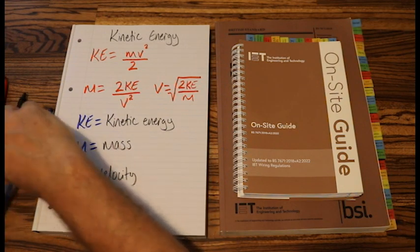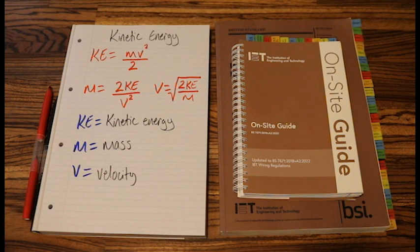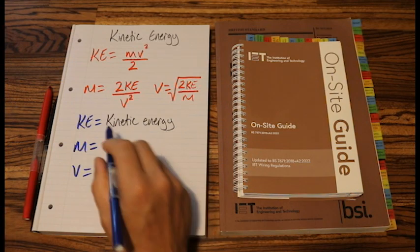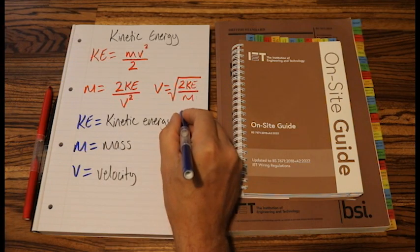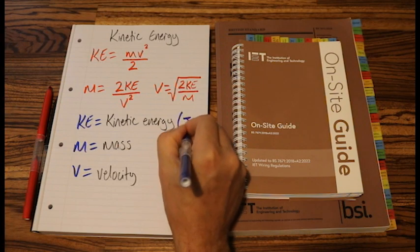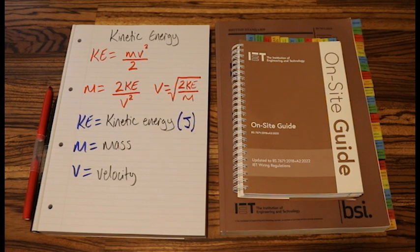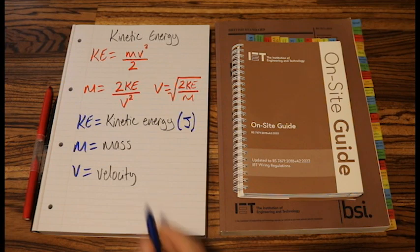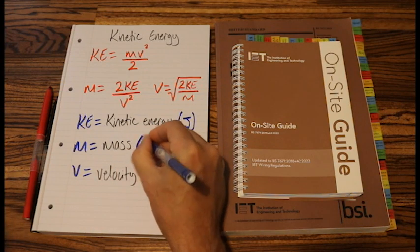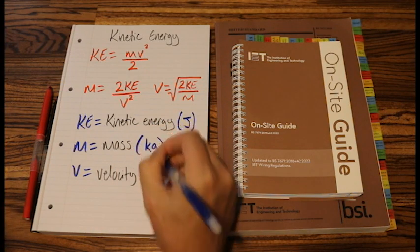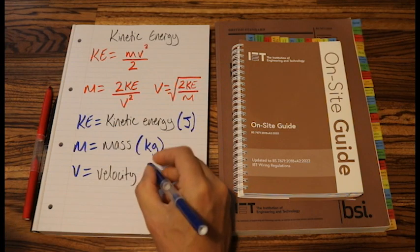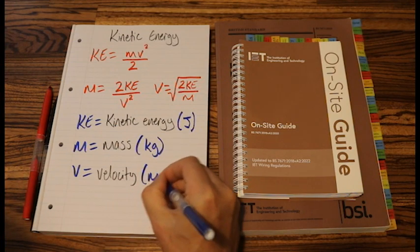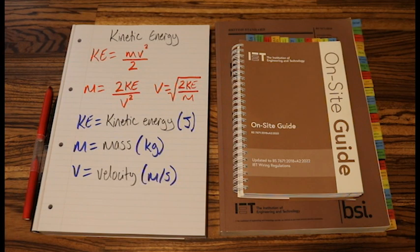I'll just grab my blue pen, so let's write down the SI unit for each of these. So kinetic energy, it is energy, energy is measured in capital J for joules. And mass, as always, is kilograms. And velocity is meters per second.